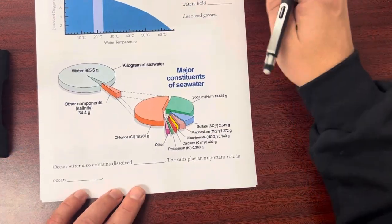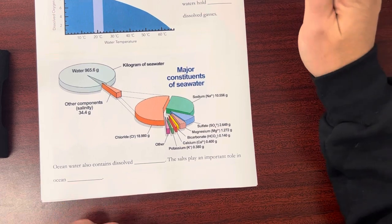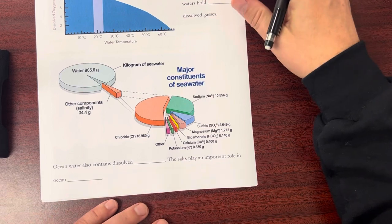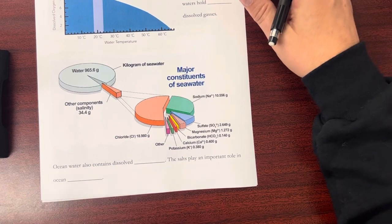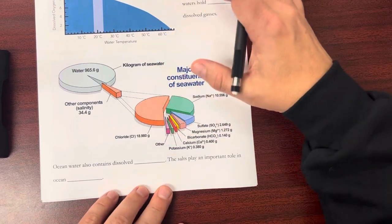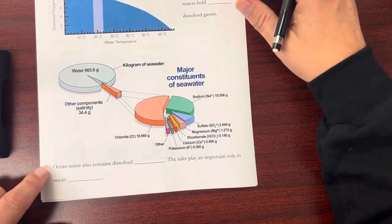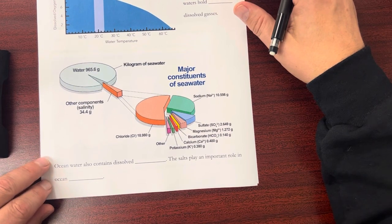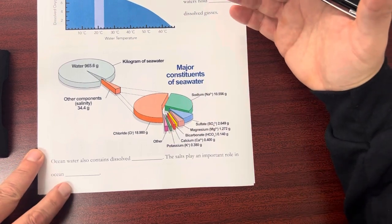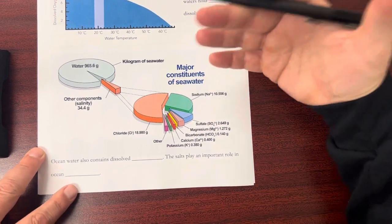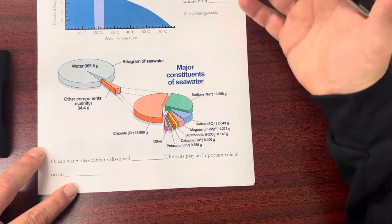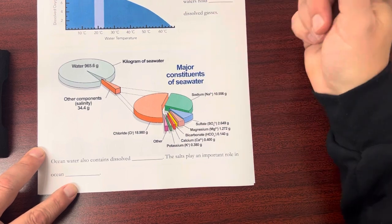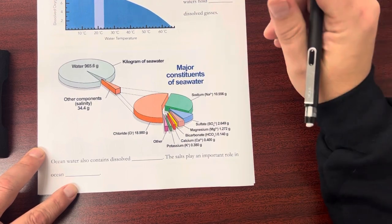Besides gases, we also talk about salts. We know that the ocean is salty, but there's more than one type of salt or ion that we find in ocean water. Ocean water contains dissolved salts, and the salts play an important role in ocean chemistry. Everything that lives in the ocean is adapted to these saltwater conditions, and these ions actually play a role in how organisms live and go through their daily lives.